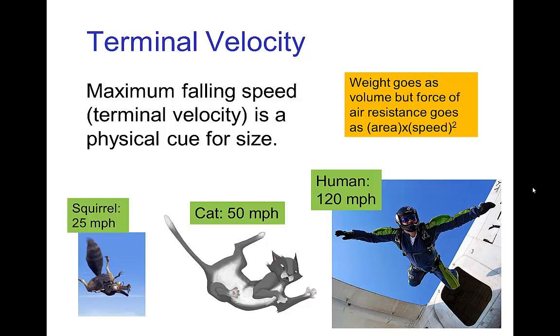Another speed which is indicative of size is the terminal velocity, which is the maximum falling speed. Because air resistance depends on the area and weight depends on volume, you'll have small animals like a squirrel having a much slower terminal velocity than something large like a human. Squirrel terminal velocity may be 25 miles an hour; human is about five times larger.